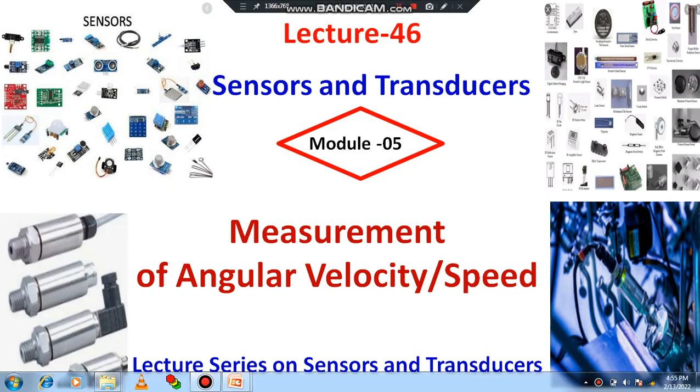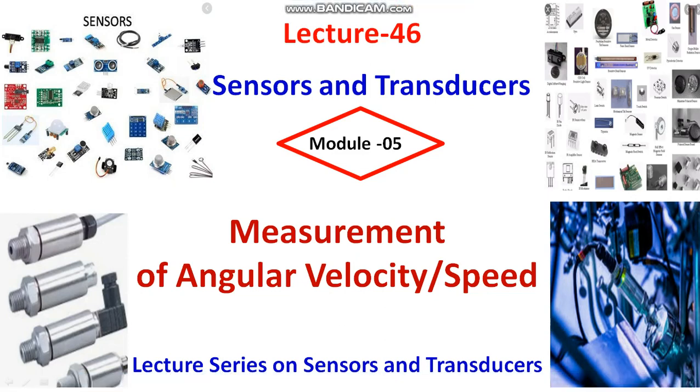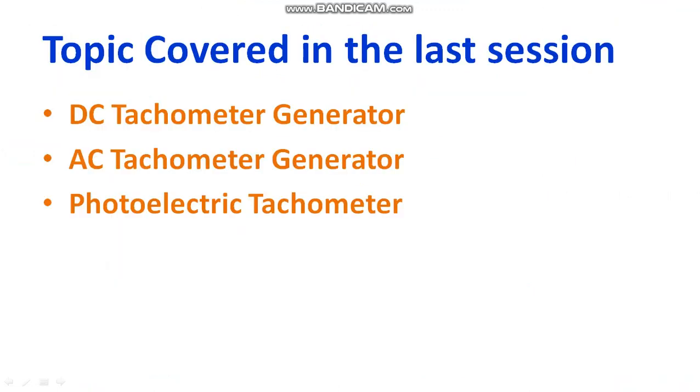Welcome to Simplified Triple Studies. In this video, I will be discussing method of measurement of angular velocity or angular speed. We have already discussed few methods in the last session: DC tachometer generator, AC tachometer generator, and photoelectric tachometer.